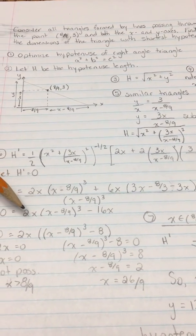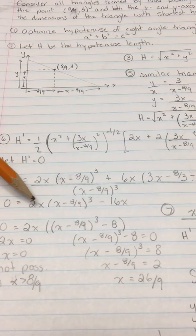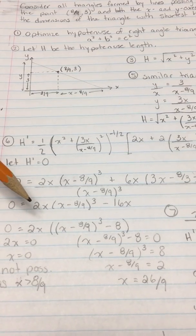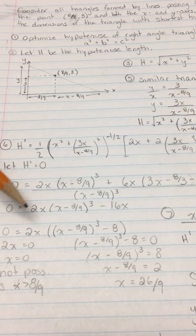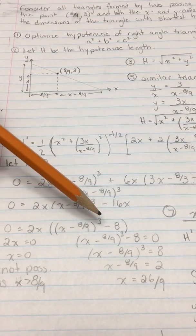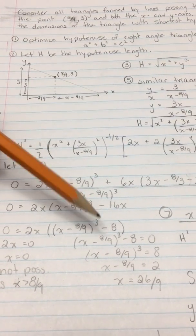So I simplified the numerator and then look at this. If you remember to always check for factors, that's going to help you out quite a bit because we can factor out 2x, and that leaves us with (x - 8/9)³ - 8 as our other factor.